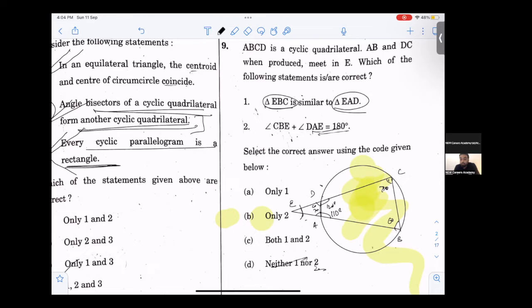If we follow this nomenclature, angle CBE, which is 60, and angle DAE. 60 plus 70 is 180. So it is only correct 1.